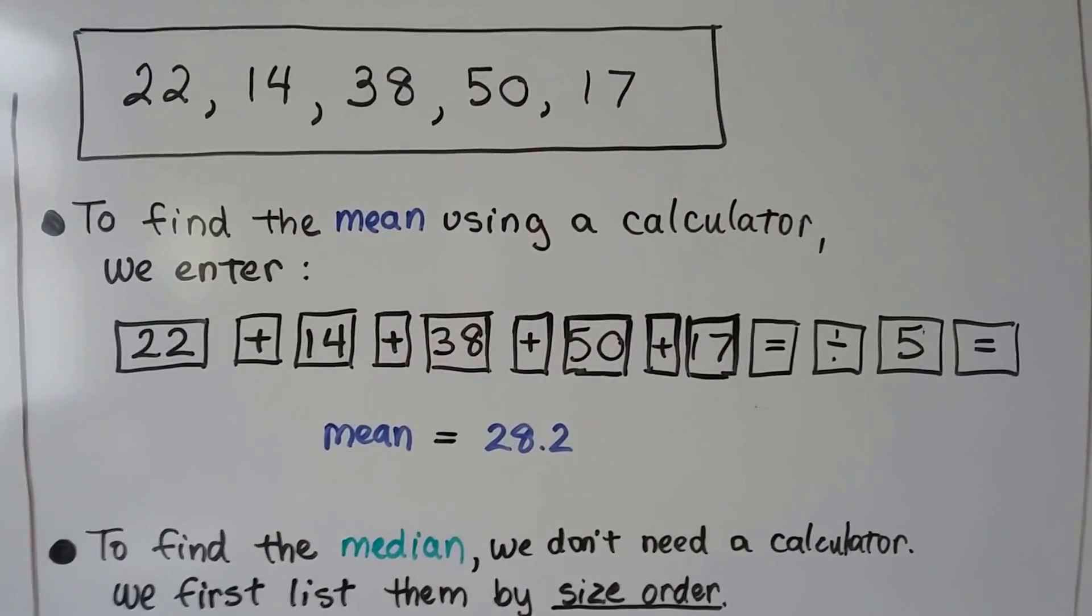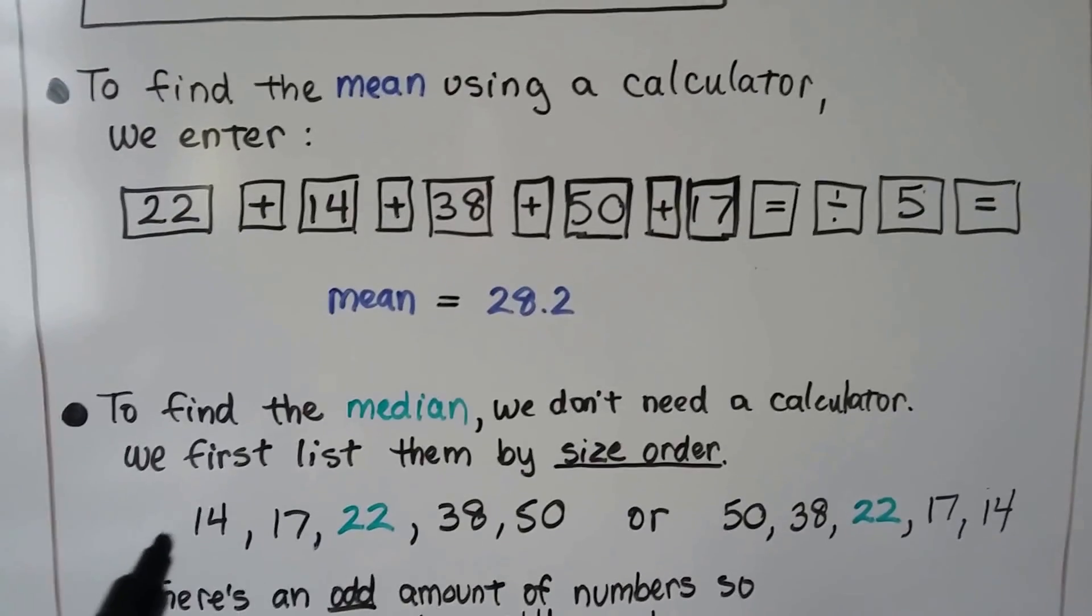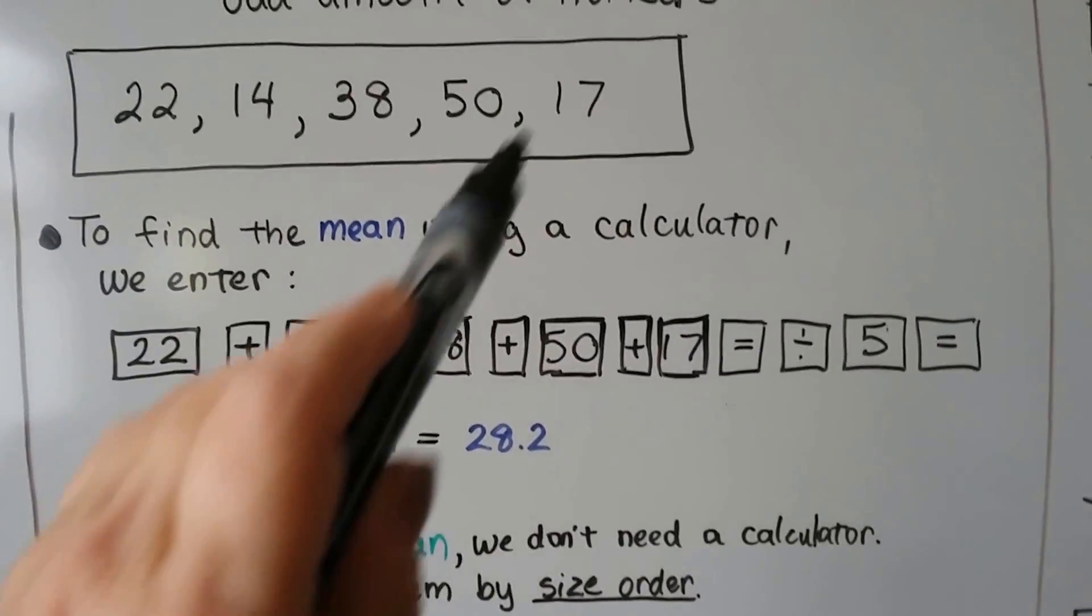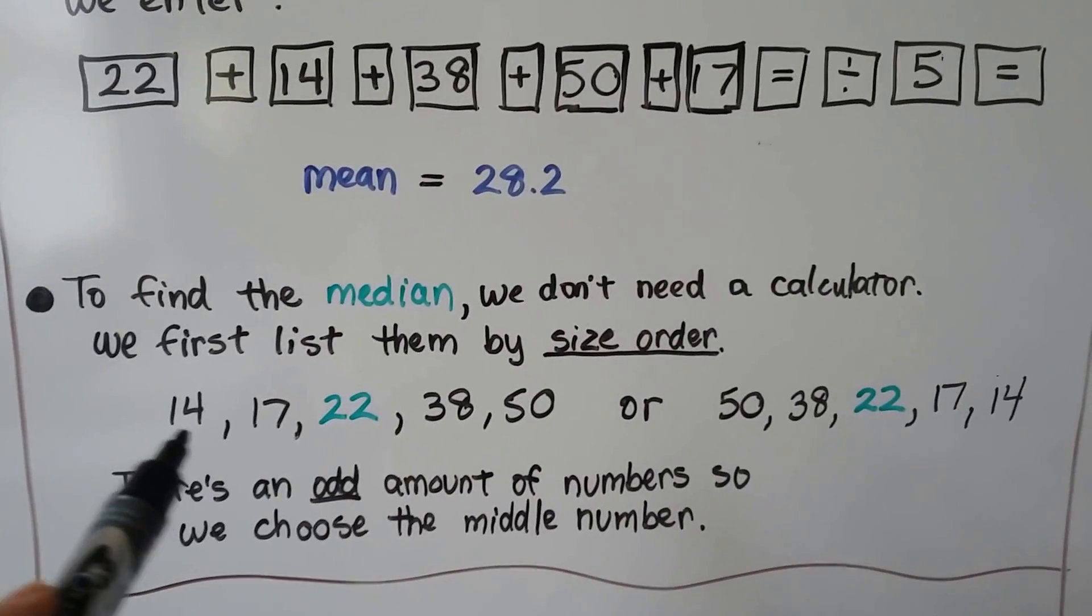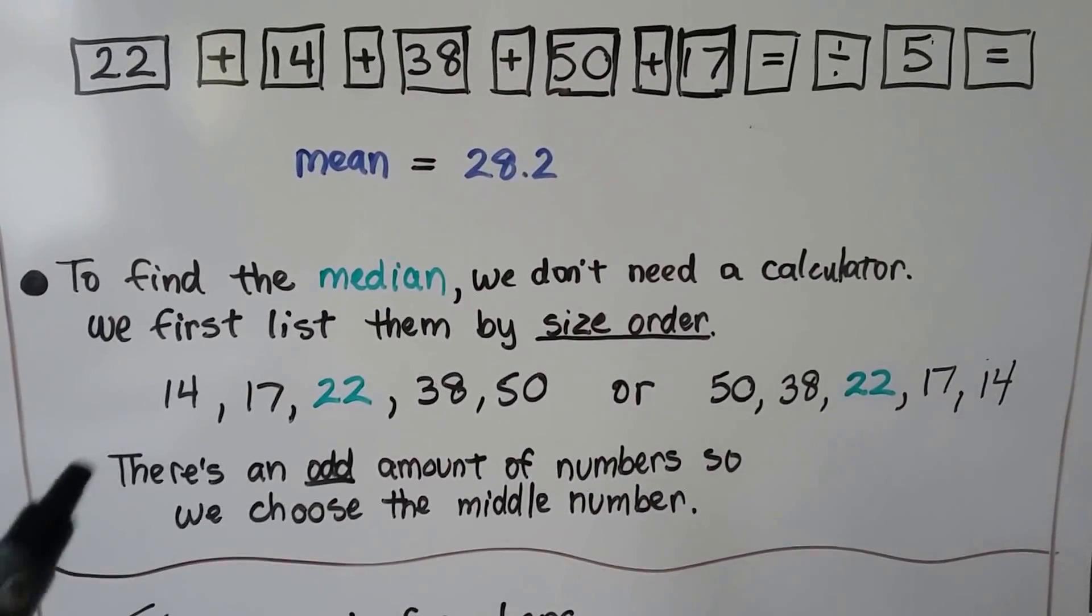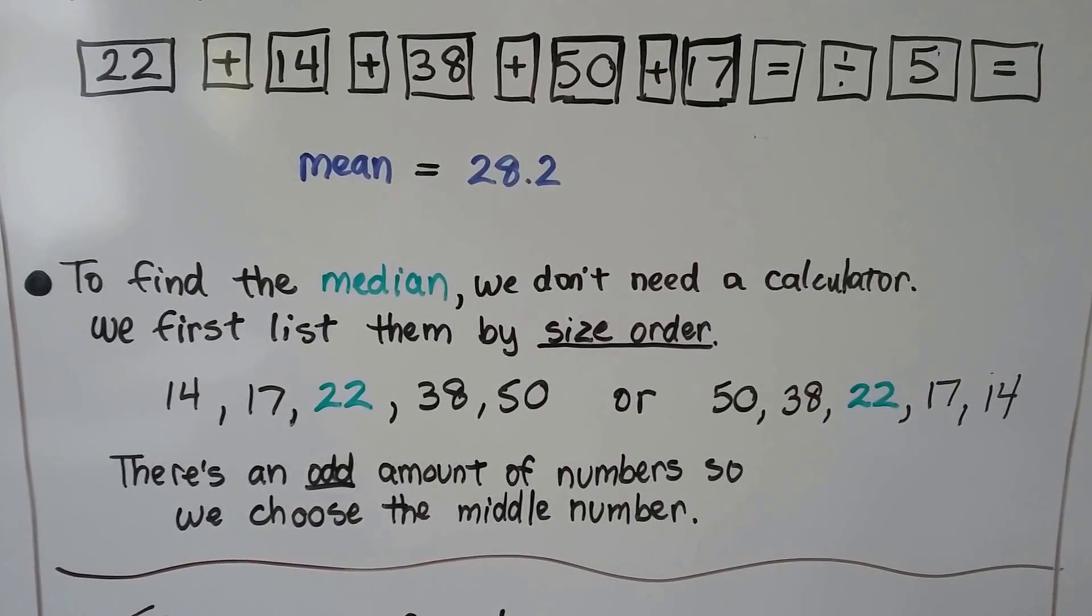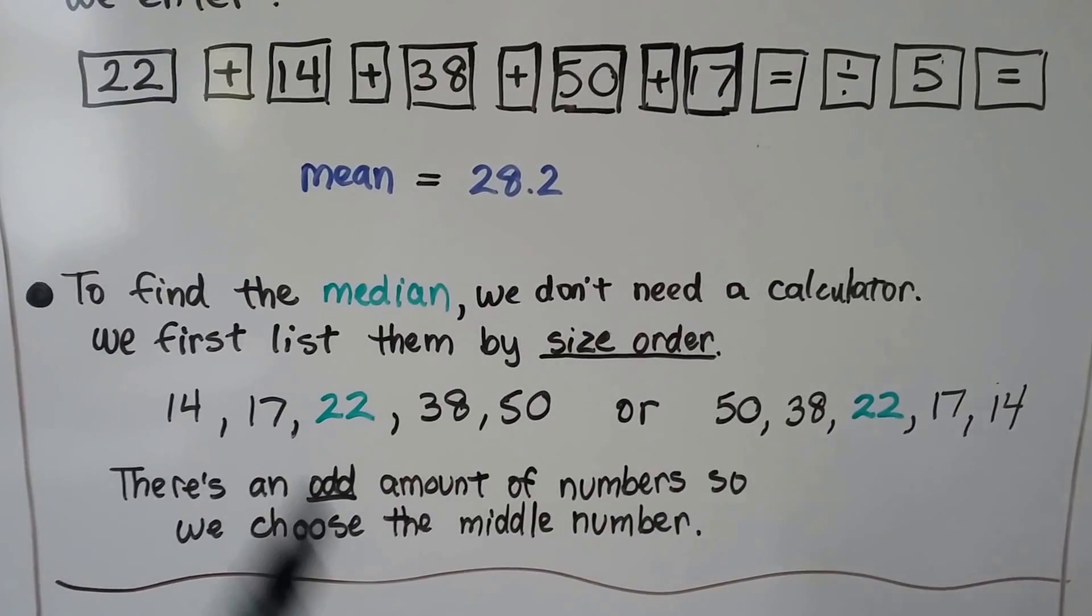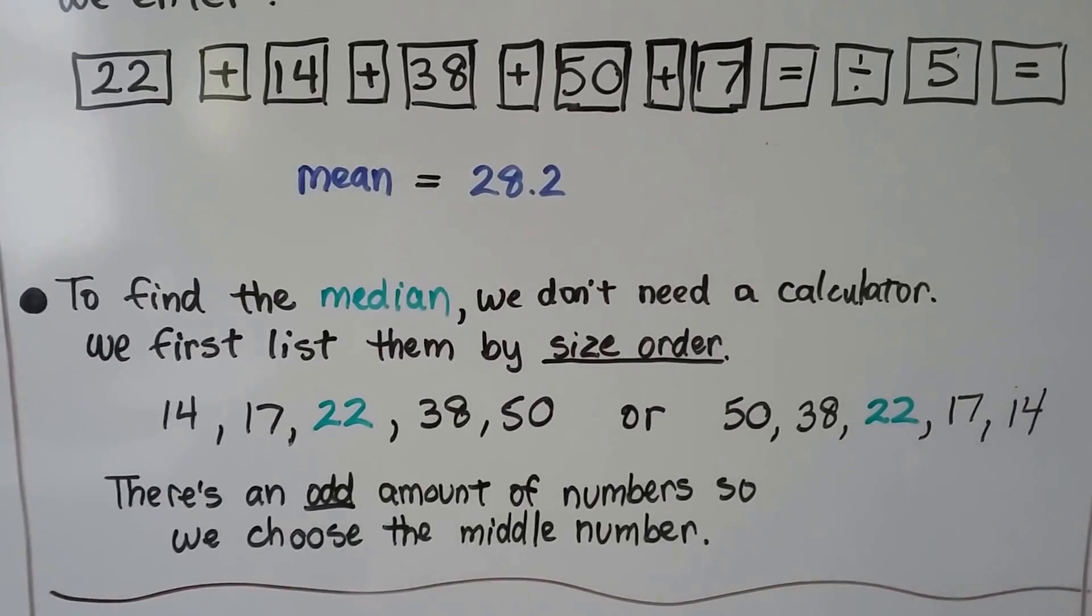To find the median, we don't need a calculator. There's an odd amount of numbers, but we do need to put them into size order. See how the 17's back here? They're not really in size order. So we put them in size order, either least to greatest or greatest to least. It doesn't matter. The middle number is still going to be a 22.